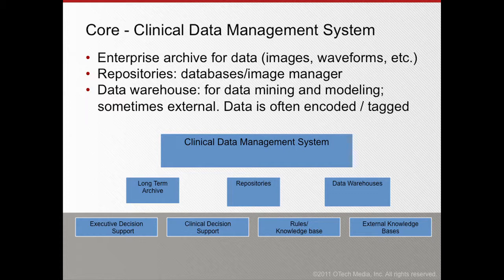Most institutions have, in addition to the archive, a data warehouse. A data warehouse is a duplication of critical — though not all — data, which is tagged and allows for data mining and modeling. For example, rather than storing a whole image in the data warehouse, we store certain metadata such as the date of the exam, type of exam, operator, and other fields important for later data analysis. The data warehouse is the source for many of the intelligent systems.